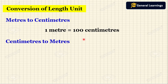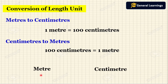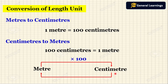Next we will see how to convert centimeters to meters. 100 centimeters equals 1 meter. To convert centimeters to meters, divide the number of centimeters by 100 and change the unit to meters. So to convert centimeters to meters we need to divide by 100. In simple terms: converting meters to centimeters — multiply by 100; converting centimeters to meters — divide by 100.